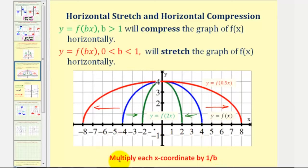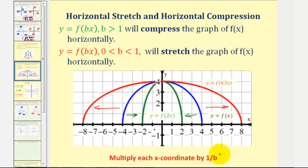To find the value of b is a little trickier than determining the value of a. If we start with the parent function, we would multiply each x coordinate by 1 over b to determine the x coordinates of the horizontally stretched or compressed function. So if we can determine what we multiply by to find the corresponding x coordinates, we would set that value equal to 1 over b and then solve for b.